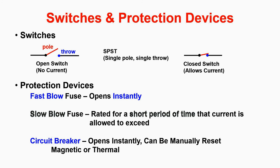Protection devices are utilized to prevent damage to circuits in the event of an overcurrent situation. Fast blow fuses open instantaneously, whereas slow blow fuses open after a period of time passes and the current is exceeded. Magnetic and thermal circuit breakers open instantly but can be manually reset.